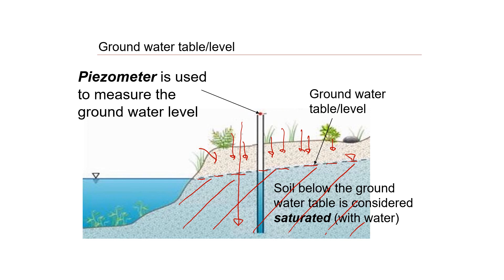To measure the groundwater level we use a piezometer — we drill a hole and install a piezometer inside. The piezometer measures the groundwater level, which can fluctuate: during heavy rainfall it can rise because more water enters the soil, and during a dry season it can go down. We need to know the groundwater level at the time of investigation because it will affect the strength of the soil.